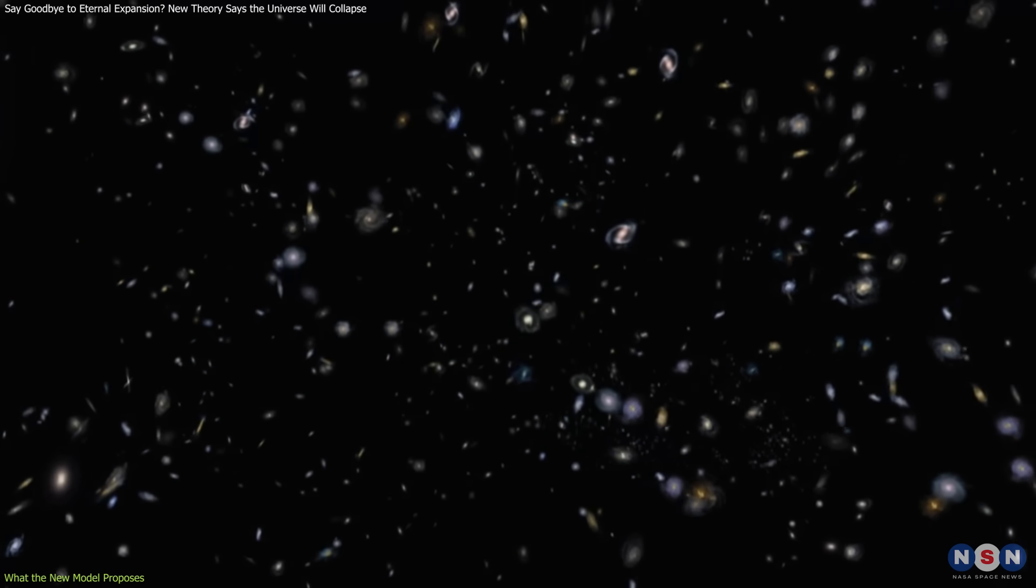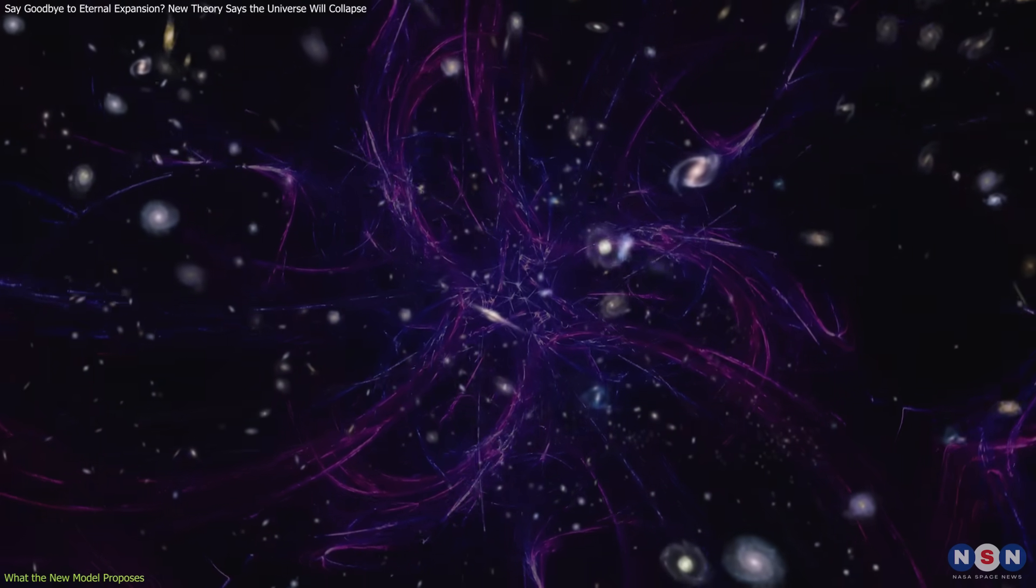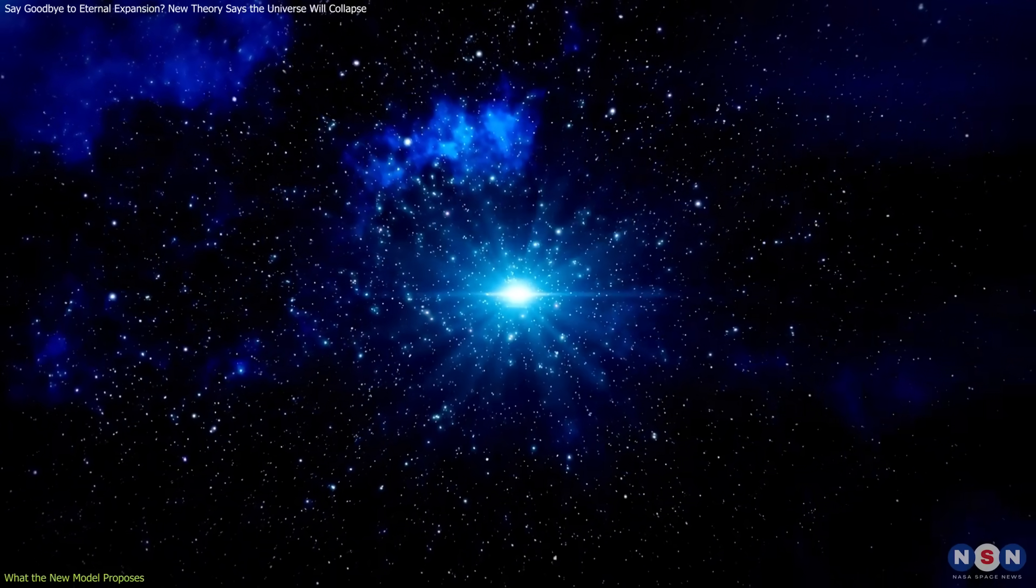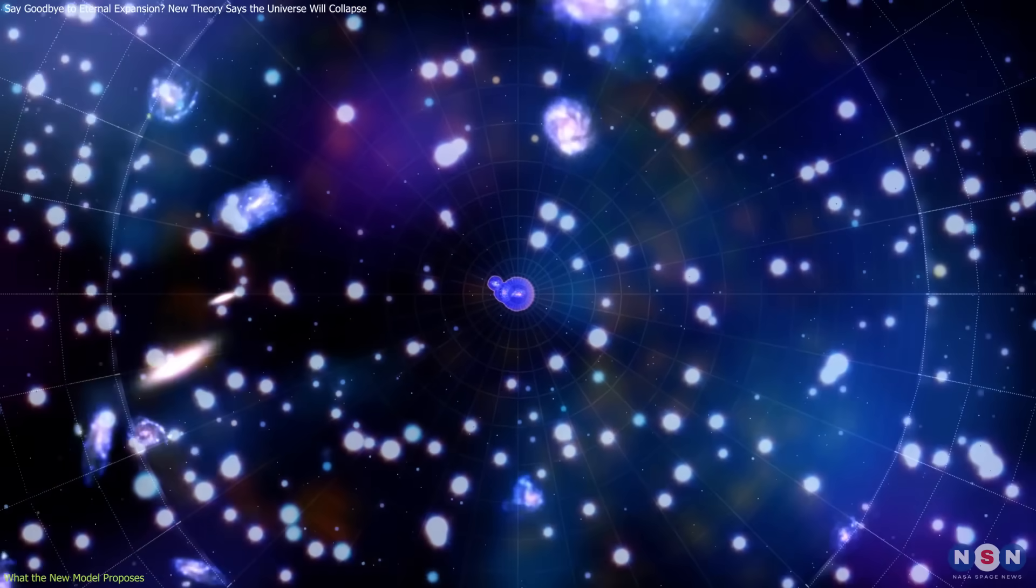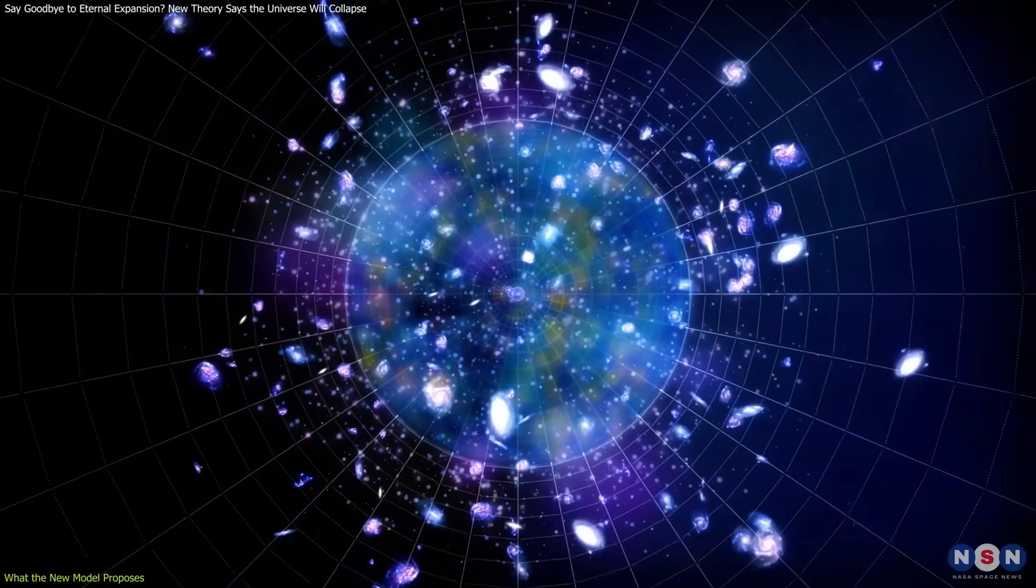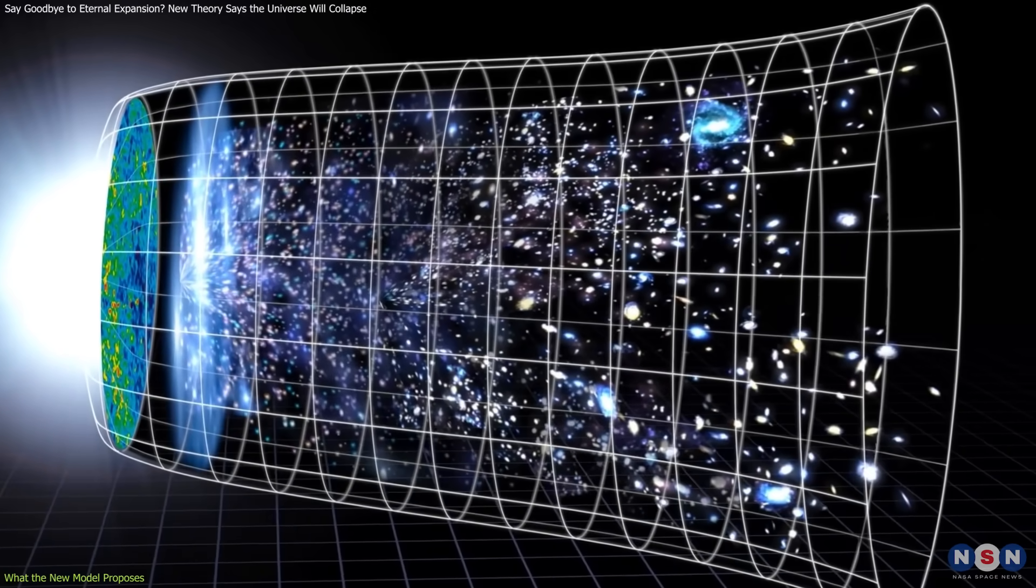For now, expansion continues. But over time, as the axion field evolves and the negative constant asserts itself, this balance tips. Expansion slows, halts, and eventually reverses. The model forecasts that the universe will continue expanding for about 7 more billion years, reaching a peak size around 69% larger than today.